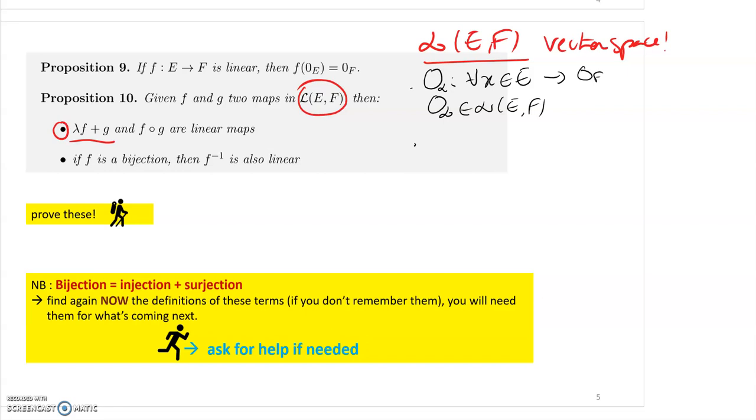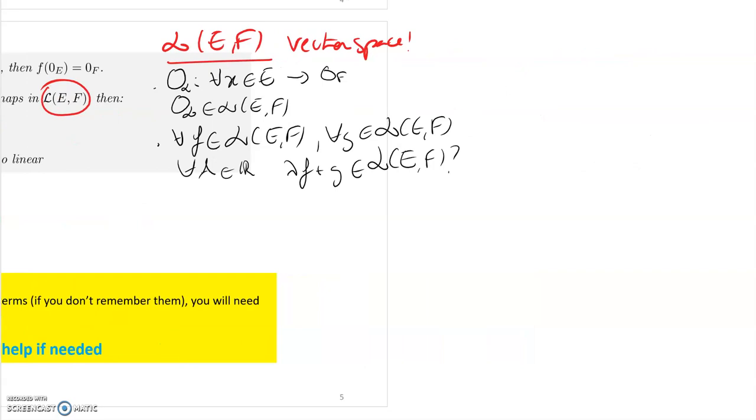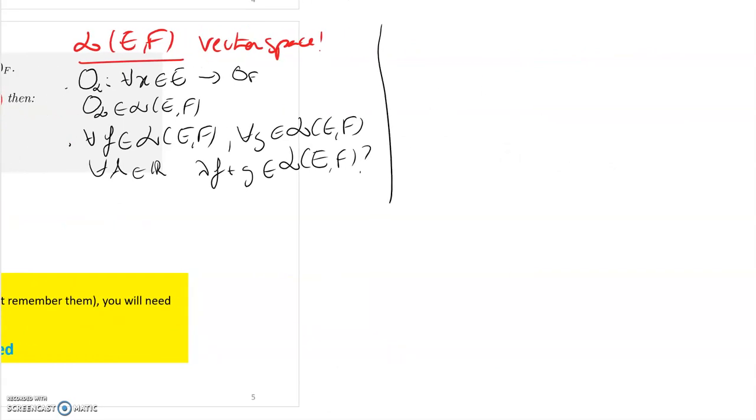So that's the first thing we need to show that we have a vector space. The second thing we need to show is to show that for any item that belongs to, for any F that belongs to the set of linear maps from E to F, and so for any lambda that belongs to R, do I have that lambda F plus G belongs to the set of linear maps from E to F? Okay, so this is pretty straightforward. So what do we need to show? We need to show that given two linear maps F and G, I have that this linear combination is still a linear map from E to F.